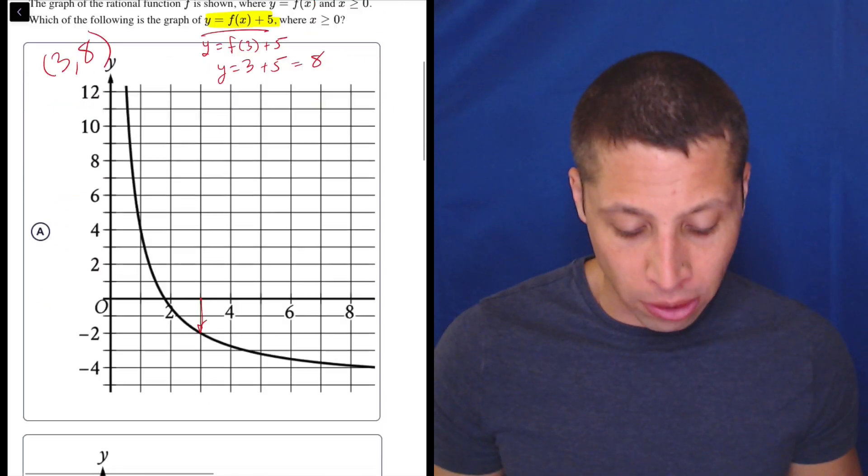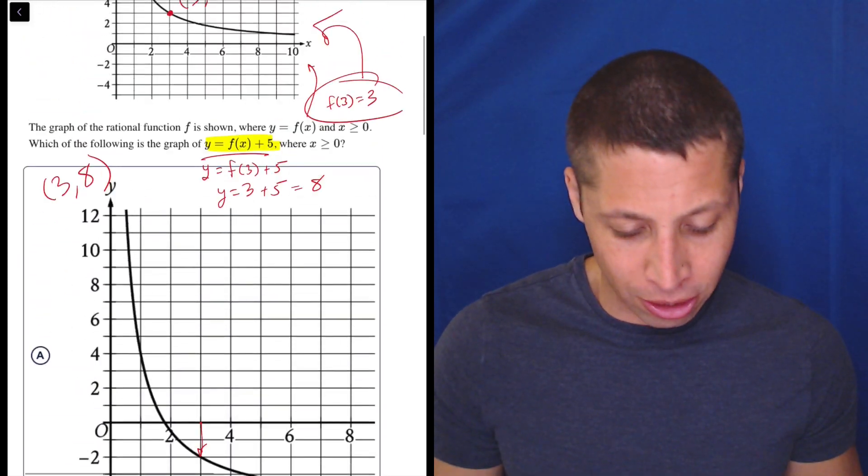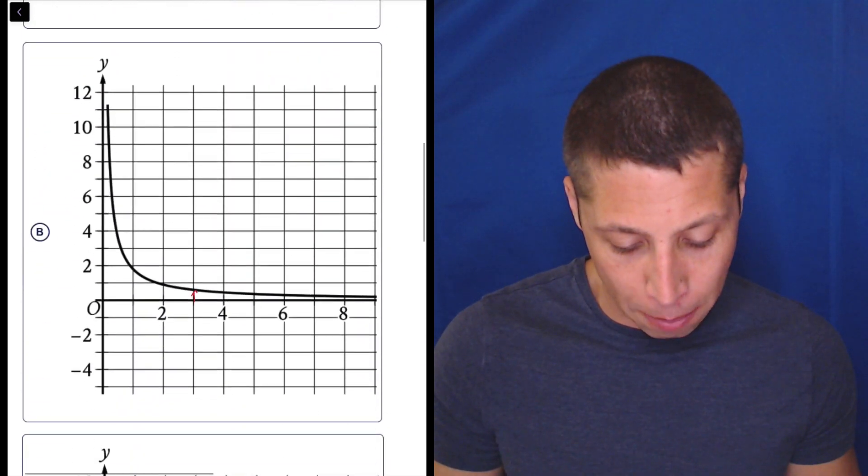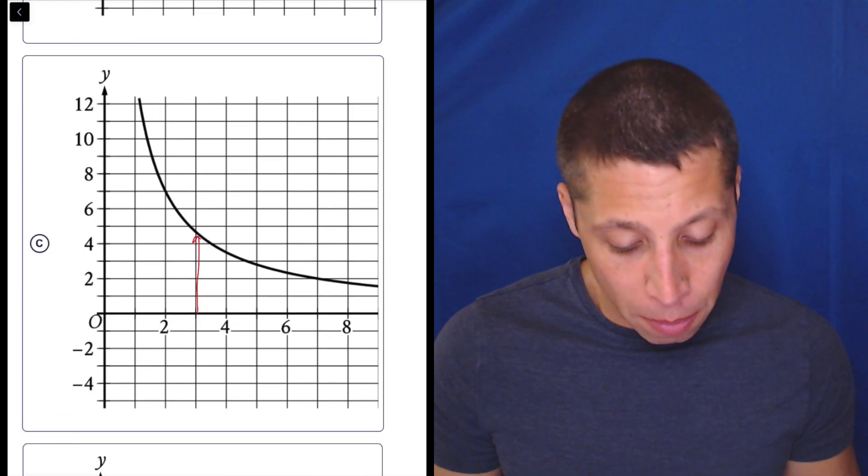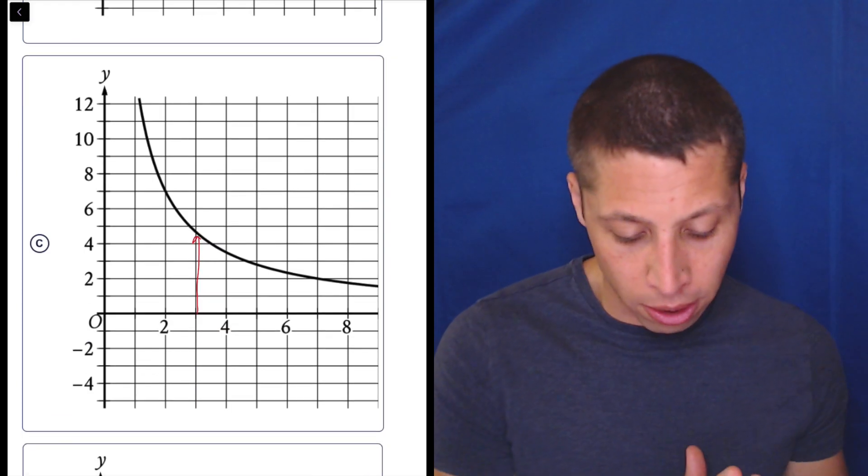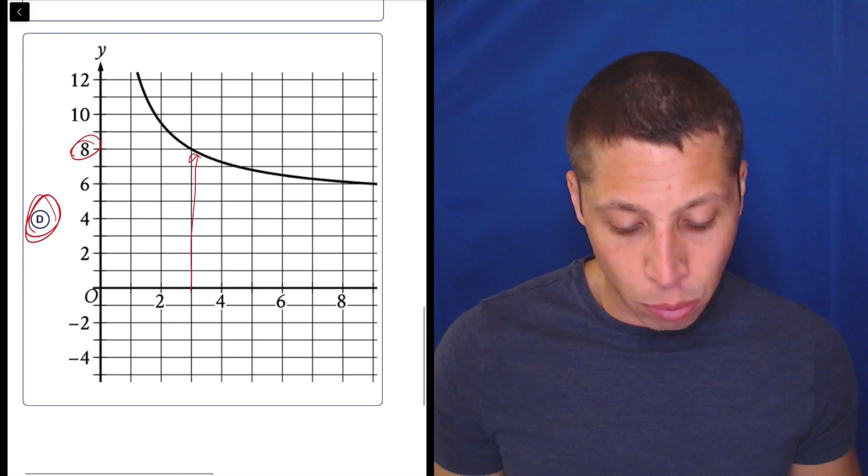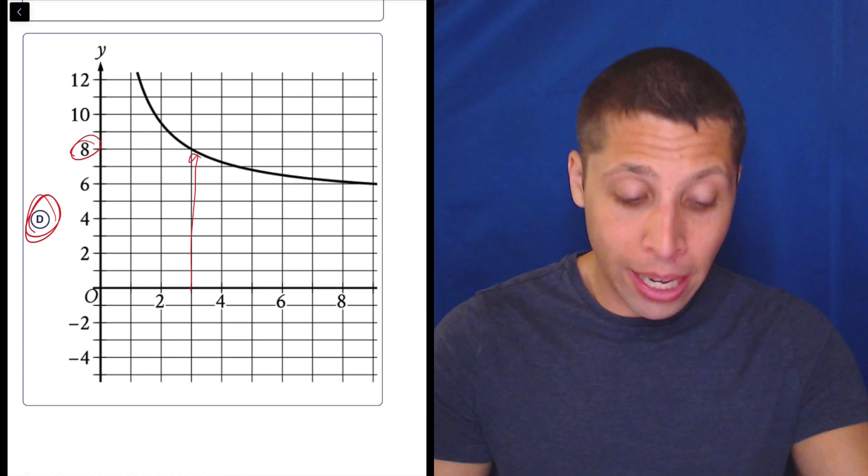And so, well, this graph looks like it goes down. This graph kind of looks like it just gets more flat. I don't even know what's happening here. This one goes up, but maybe not enough, and it kind of almost goes to the right a little bit. And then this one goes up, and it goes up the amount we need. So that's really it.